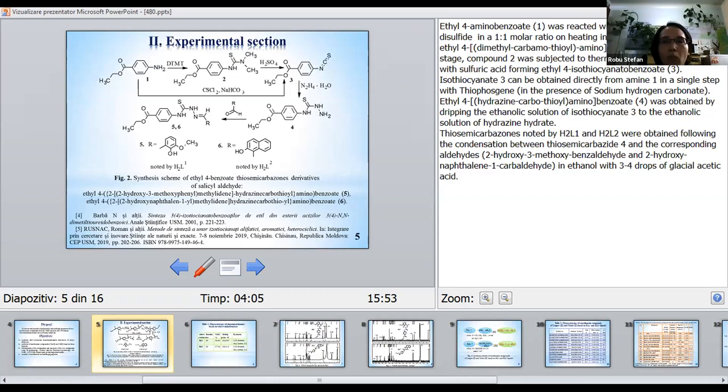Ethyl-4-amino-benzoate 1 was reacted with tetramethylthiuram disulfide. This is a scheme of ethyl-4-benzoate thiosemicarbazones derivatives of salicyl aldehyde. Ethyl-4-amino-benzoate 1 was reacted with tetramethylthiuram disulfide in a 1 to 1 molar ratio on heating in dimethylformamide to form ethyl-4-dimethylcarbothioyl-amino-benzoate 2.